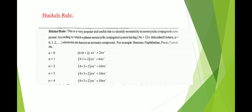Hückel's rule is a very popular and useful rule to identify aromatic compounds in monocyclic conjugated compounds. According to this rule, a planar monocyclic conjugated system having 4n+2 pi electrons, which should be delocalized, is known as an aromatic compound. Examples include benzene, naphthalene, furan, and pyrrole. If you put n equal to 0, 1, 2, 3, and 4, you get 2, 6, 10, 14, and 18 pi electrons respectively.